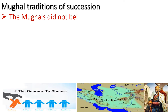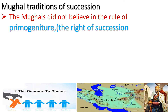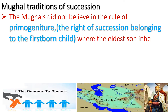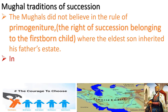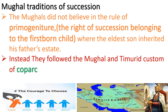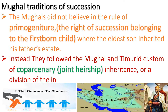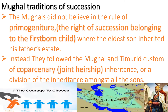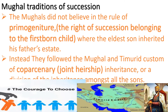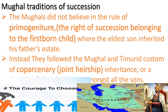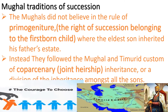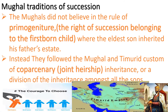The Mughal traditions of succession did not follow the rule of primogeniture — where the eldest son inherits his father's estate. Instead, they followed the Mughal and Timurid custom of co-parcenary, that is, joint heirship or a division of the empire among all the sons of the king. That was the important theory they adopted, rather than the primogeniture theory.